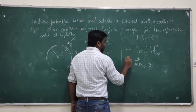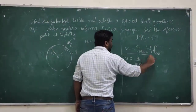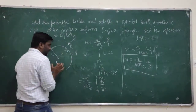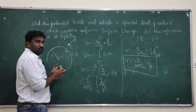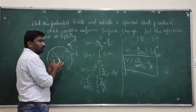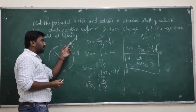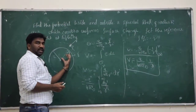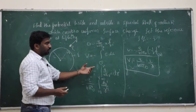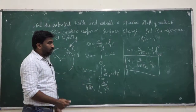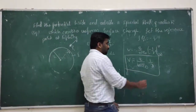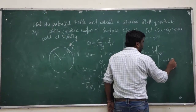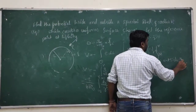So this is the potential of a spherical shell. Due to the spherical shell, the potential at a point P at a distance r is V equal to q divided by 4 pi epsilon multiplied by 1 over r. This is the potential outside the shell.